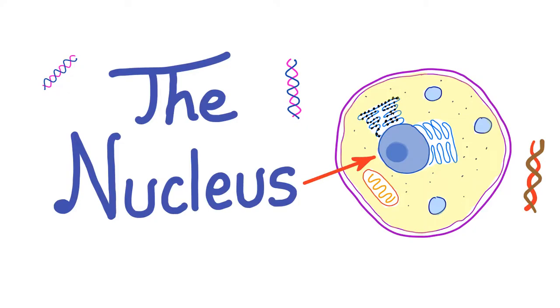In the previous videos we have talked about cell theory and the eukaryotic cell. Today, let's talk about the brain of the cell. The nucleus is the topic of today's video. This is Medicosis Perfectionalis and let's get started.